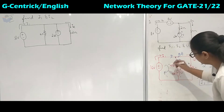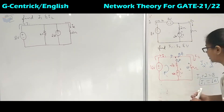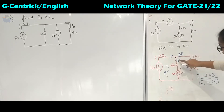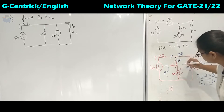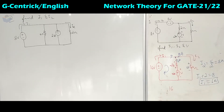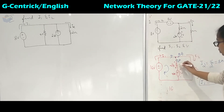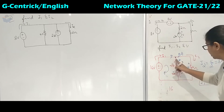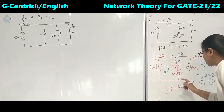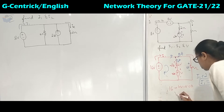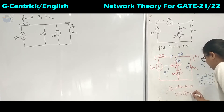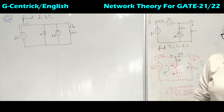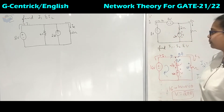To find V, we apply KVL in this loop. We get plus 16 volts. The voltage drop across the 2-ohm resistor is 2 into 2 equals 4 volts — the current enters the positive terminal of the passive element. So: plus 16, then plus 4 volts, then minus V equals 0, giving V equal to 20 volts. In this case, since the polarities were the same, we added the sources: 8 plus 8 becomes 16.